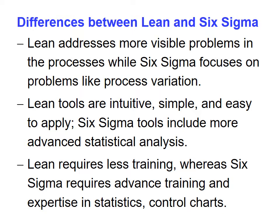Differences between Lean and Six Sigma: Lean addresses more visible problems in the process, while Six Sigma focuses on problems like process variation. Lean tools are intuitive, simple, and easy to apply. Six Sigma tools include more advanced statistical analysis. Lean requires less training, whereas Six Sigma requires advanced training and expertise in statistics and control charts.